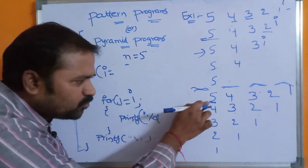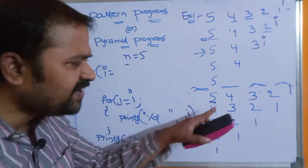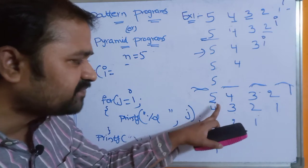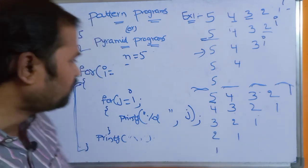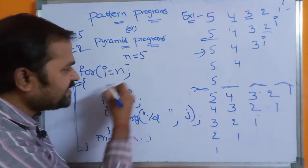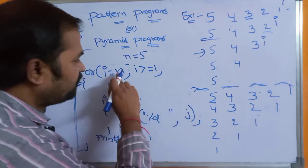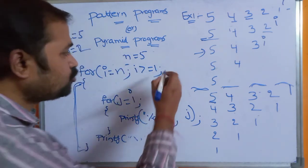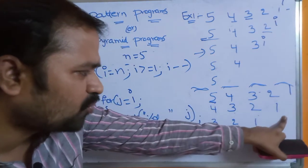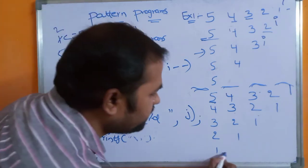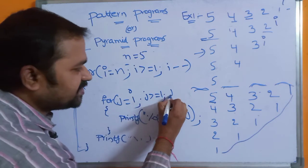In the first iteration i should be 5 (since j gets its value from i and the first row starts at 5). Second iteration i=4, third i=3, fourth i=2, fifth i=1. So the outermost loop: i starts at N, decrements with i--, and the condition is i >= 1. The innermost loop: j starts at i, the condition is j >= 1, and j decrements with j--.